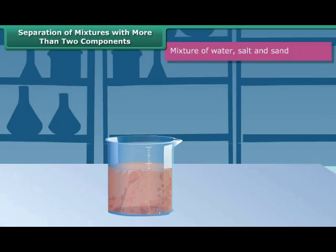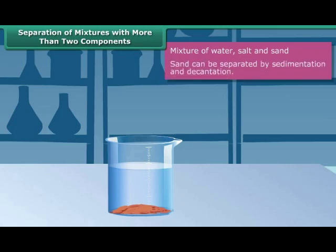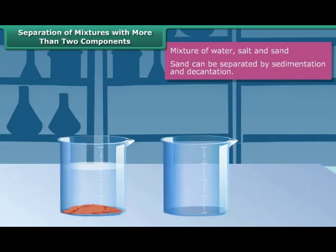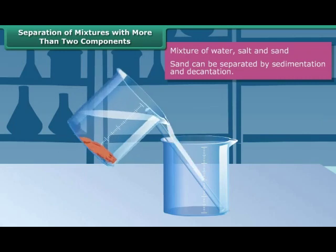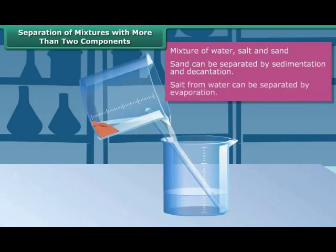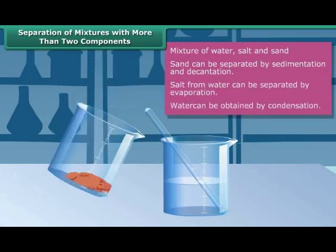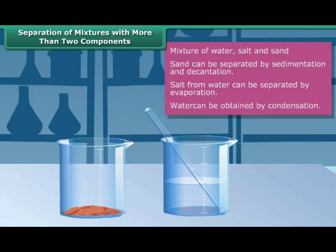You will leave the mixture undisturbed for a while to separate sand. Sand, which is heavy and insoluble in water, settles down at the bottom of the container. The mixture is then separated by decantation to get sand. Now, salt being soluble, is completely dissolved in water. This is done through evaporation and condensation.